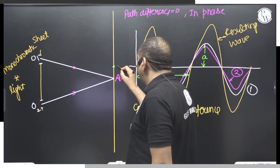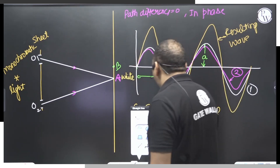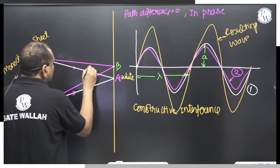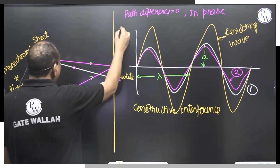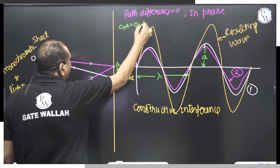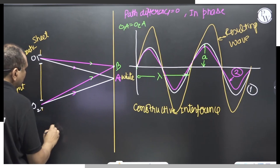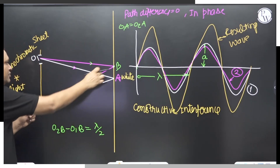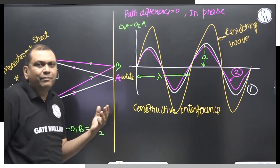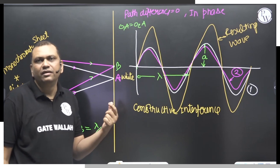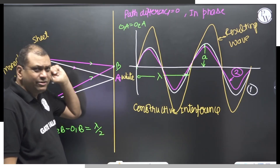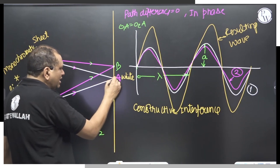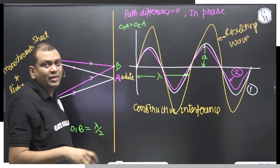Now let us say at point B, if it so happens that O2B minus O1B equals lambda by 2 — that is, path difference is lambda by 2. As we move from the center either side, the path difference keeps on increasing, because one distance keeps increasing while the other keeps decreasing.